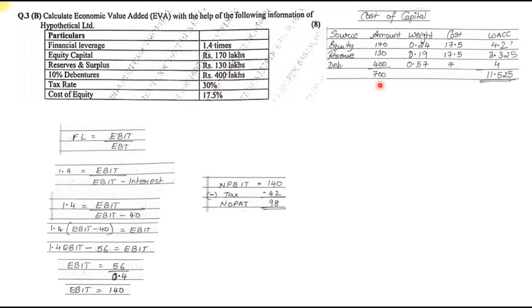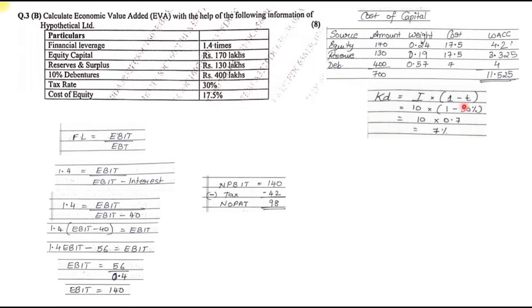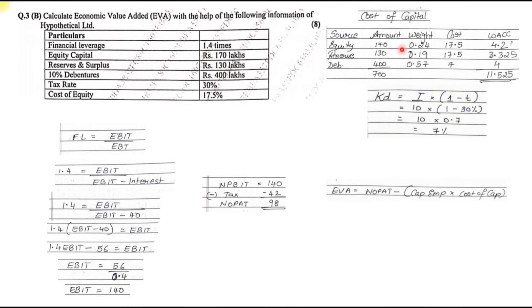Weights are: 170/700, 130/700, and 400/700. Cost of equity = 17.5% for both equity and reserves. Cost of debt (KD) = Interest × (1 − Tax) = 10% × (1 − 30%) = 7%. Multiply each weight by its cost and sum them up to get WACC = 11.525%.